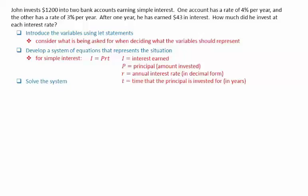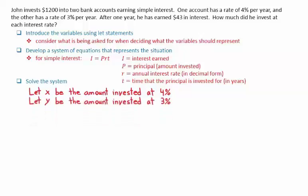For this question, we want to figure out how much was invested at each interest rate. We can therefore say that x is the amount invested at 4% and y the amount invested at 3%. Note that these actually correspond to the principal for the 4% account and 3% account.